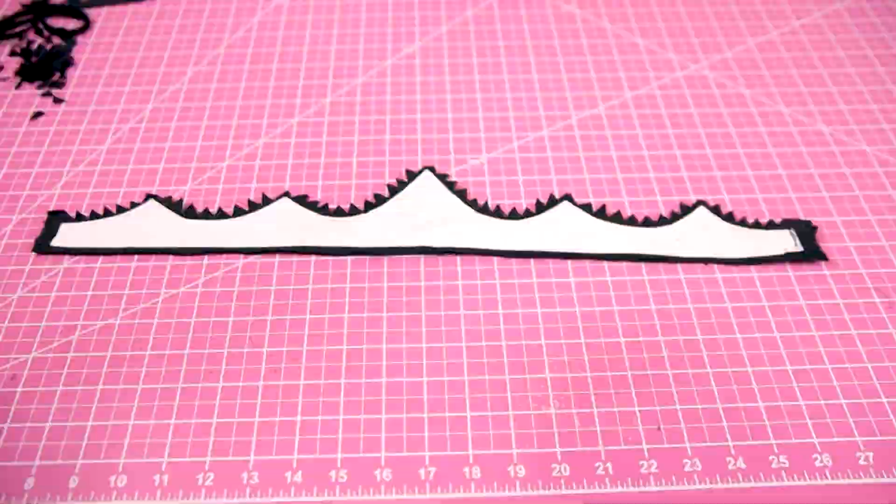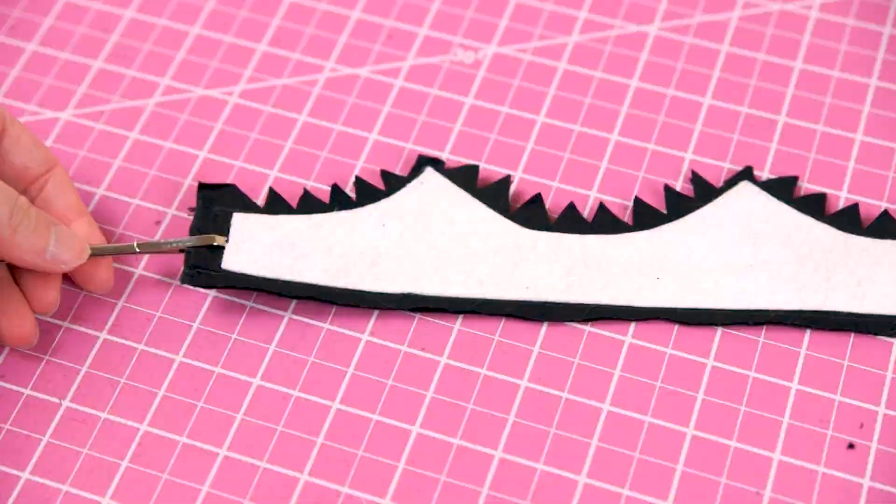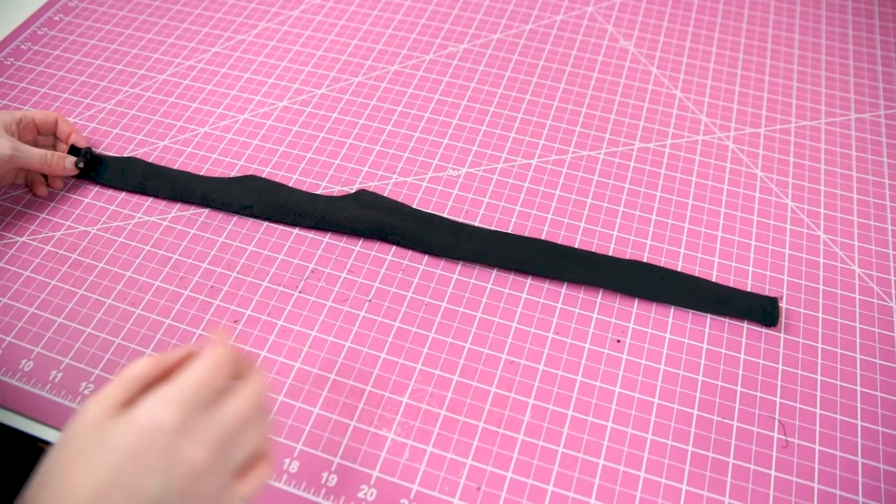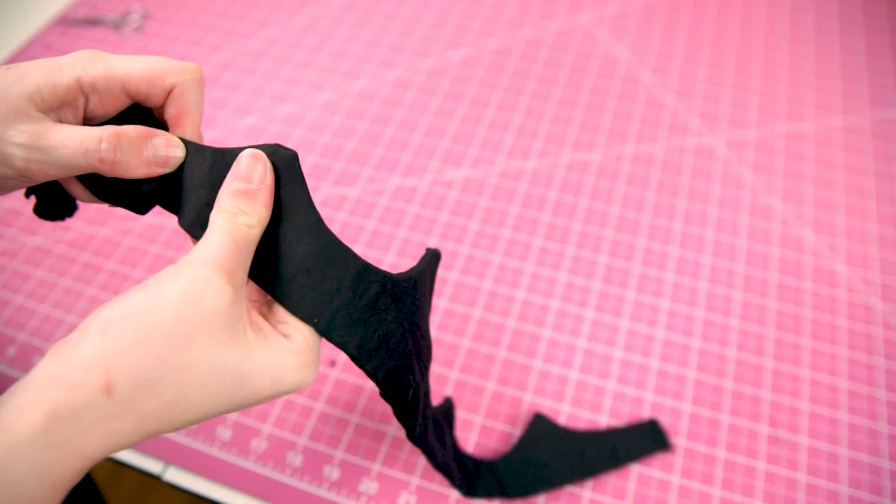I used a bodkin to turn my piece right side out. Once the crown is turned it will mostly be a tube shape. You'll want to use a corner press or something similar to poke out the points at the tops of our crown peaks.